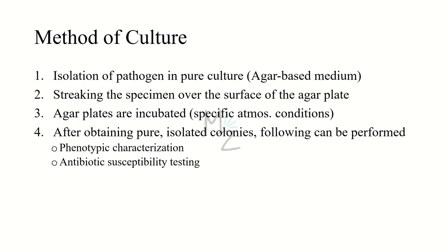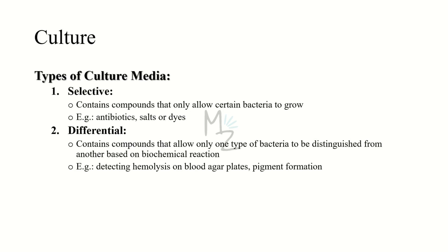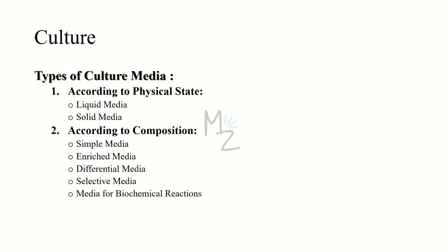There are two major types of culture media: selective and differential. Selective media contain compounds such as antibiotics, salts, or dyes that allow only certain bacteria to grow. Differential media contain compounds that allow one type of bacteria to be distinguished from another based on biochemical reactions — for example, detecting hemolysis on blood agar plates or pigment formation.